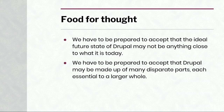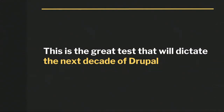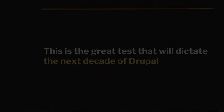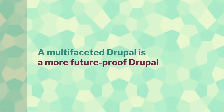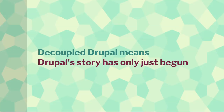What it means is that we may have to be prepared to accept that the ideal future state of Drupal might not be close to what it is right now. Drupal might actually become a bunch of different components — a bunch of different services — as opposed to a monolithic whole. But we can still call that Drupal, as long as we provide that seamless experience people have come to expect. I believe very strongly that a multifaceted Drupal, made up of all these different exciting components and approaches, is actually a more future-proof Drupal. By decoupling Drupal, we've unleashed a lot of power, and Drupal's story has only just begun.